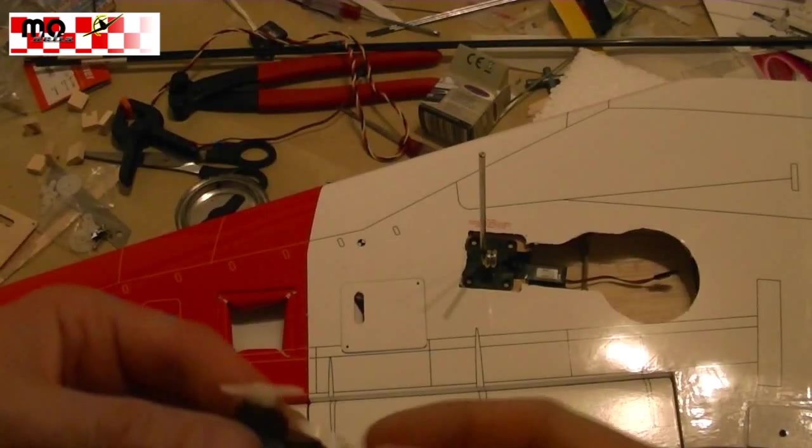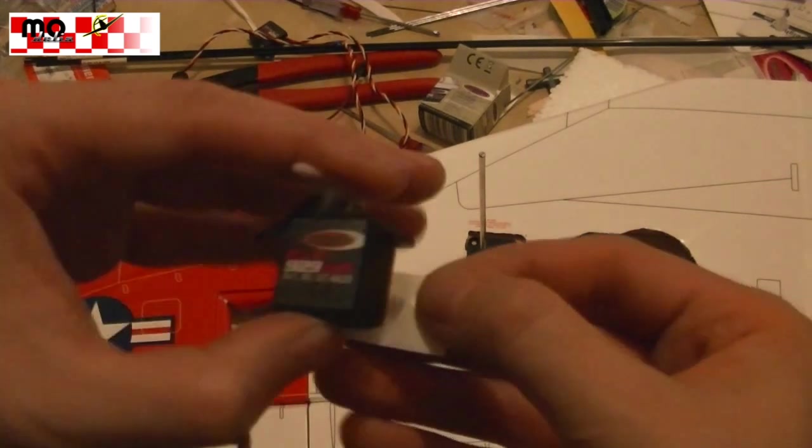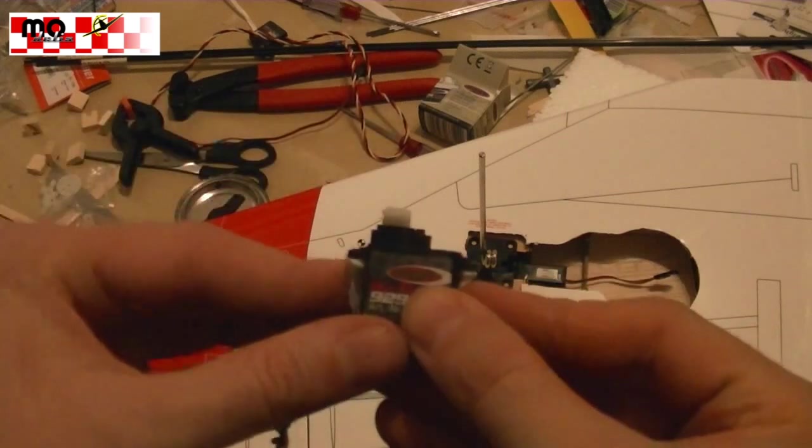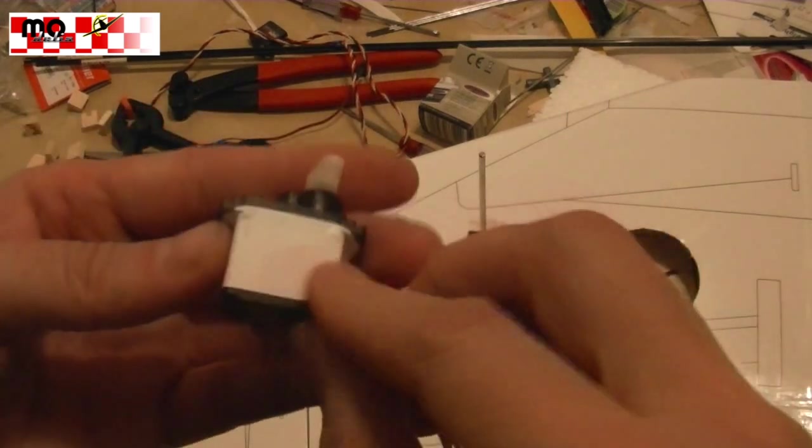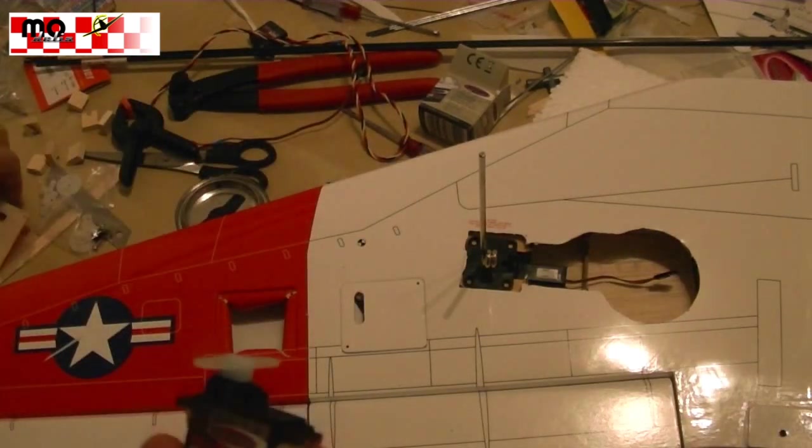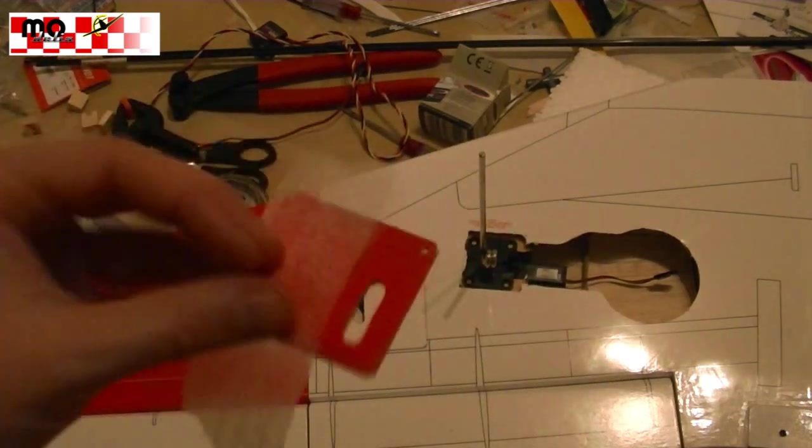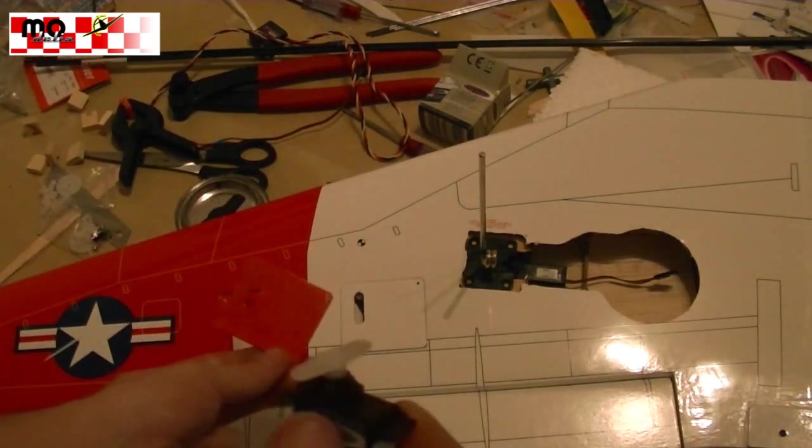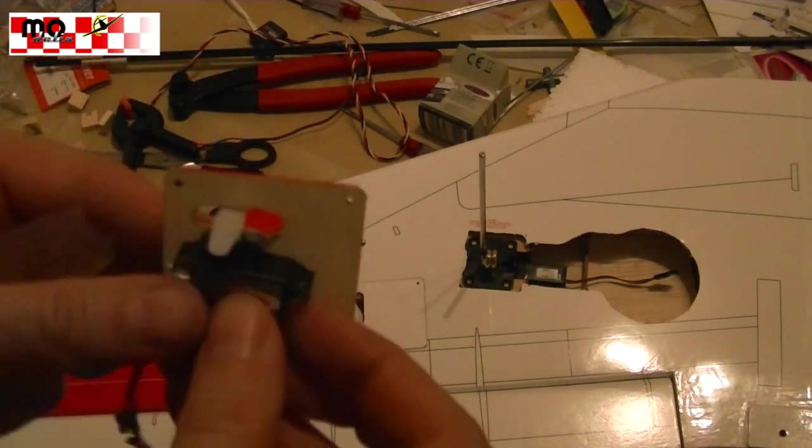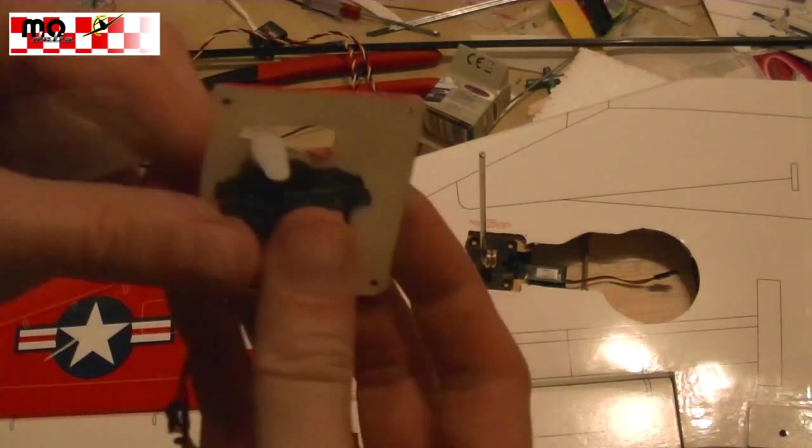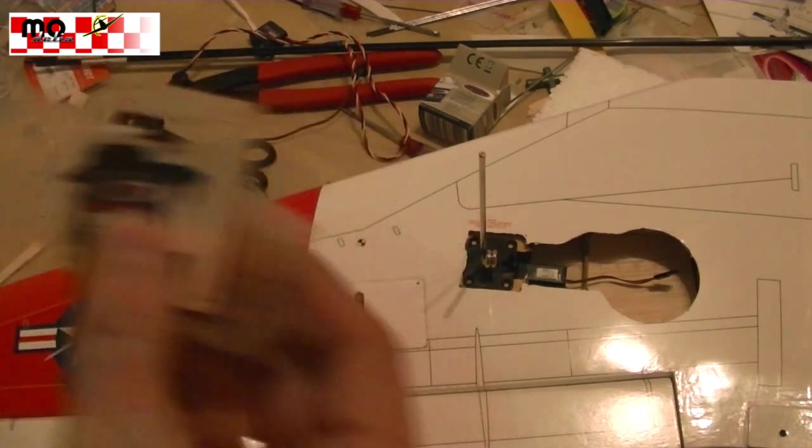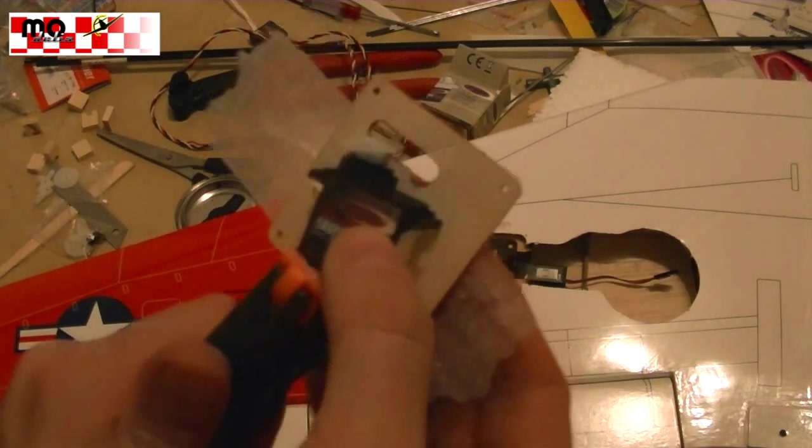For the servos, we use a servo as a template. To mount the servos as best fitting as possible, we use one servo as a stencil. We wrap the servo in some tape to prevent the servo from being glued to the cover. Now we fix the servo in the correct position.